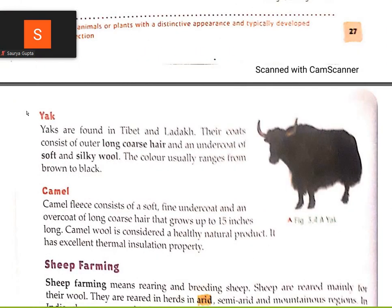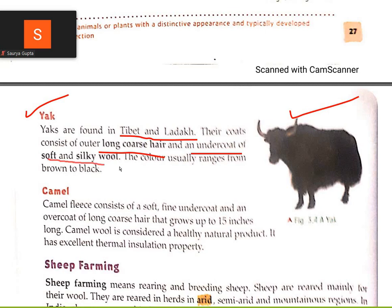The soft white yarn from Angora rabbit is used to make sweaters. Next, yak — yak are found in Tibet and Ladakh. Their coats consist of outer long coarse hair and an undercoat of soft and silky wool. The color usually ranges from brown to black.